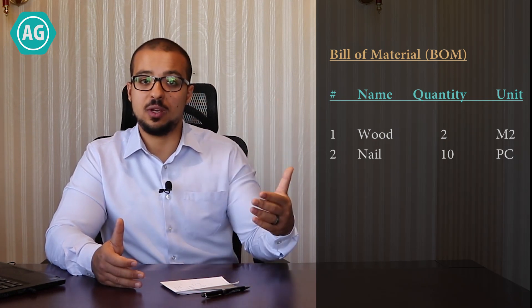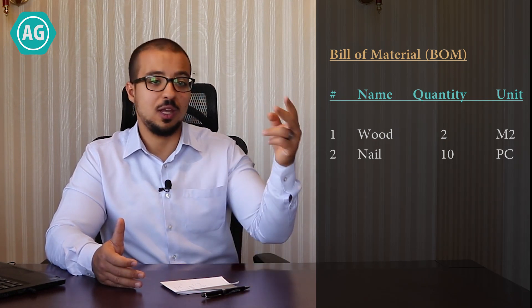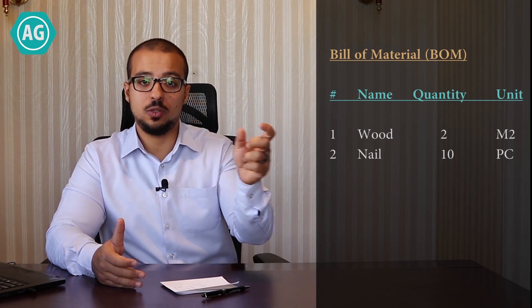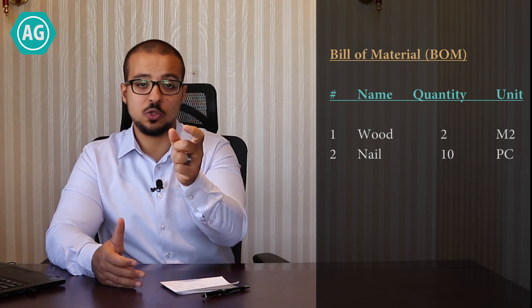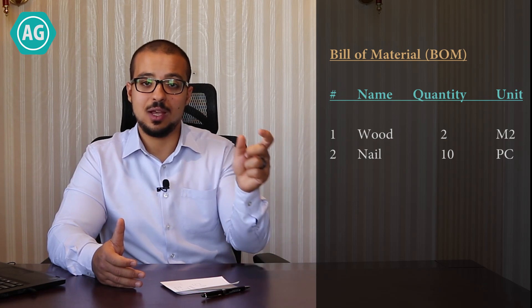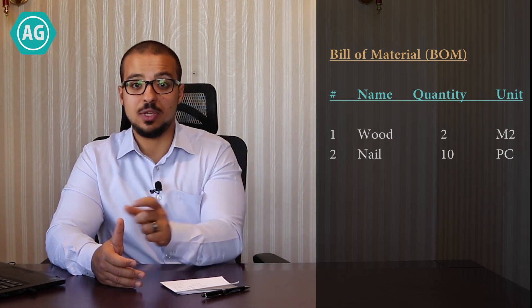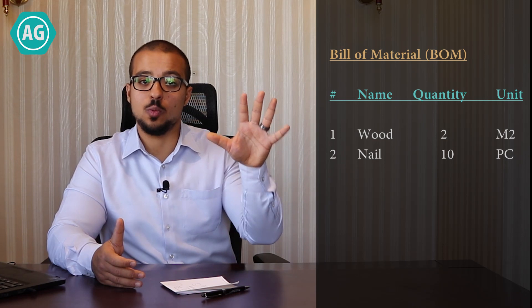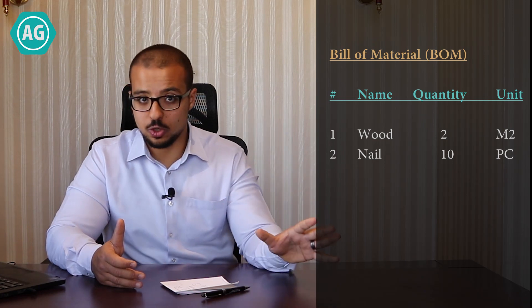For our chair we have a bill of material that lists two components: the first component is wood — we need two square meters — and the second component is nails — we need ten pieces. These are our direct materials, or the components for our production.